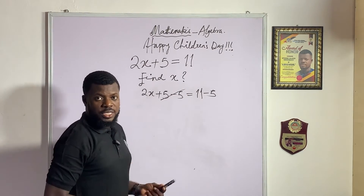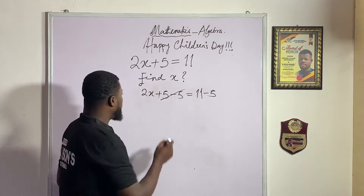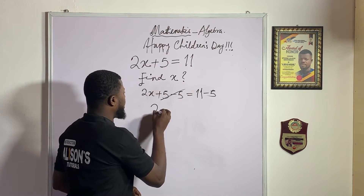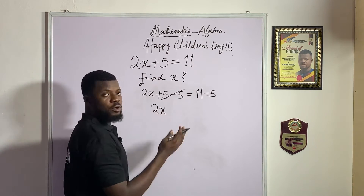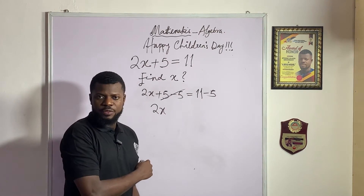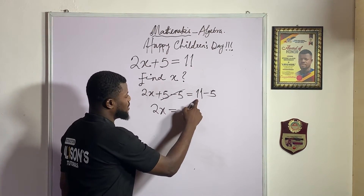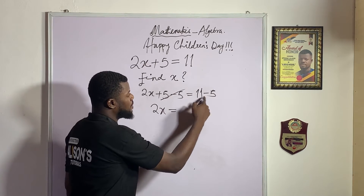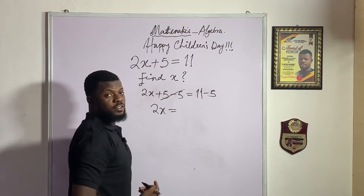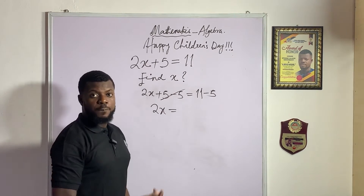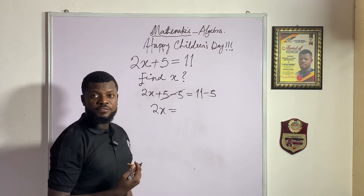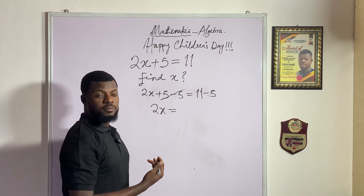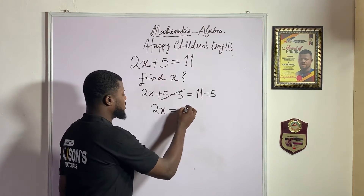Now we have 2x left on the left-hand side of the equation. Then 11 minus 5 gives us 6 — if you pull out 5 from 11, you'll have 6 left.